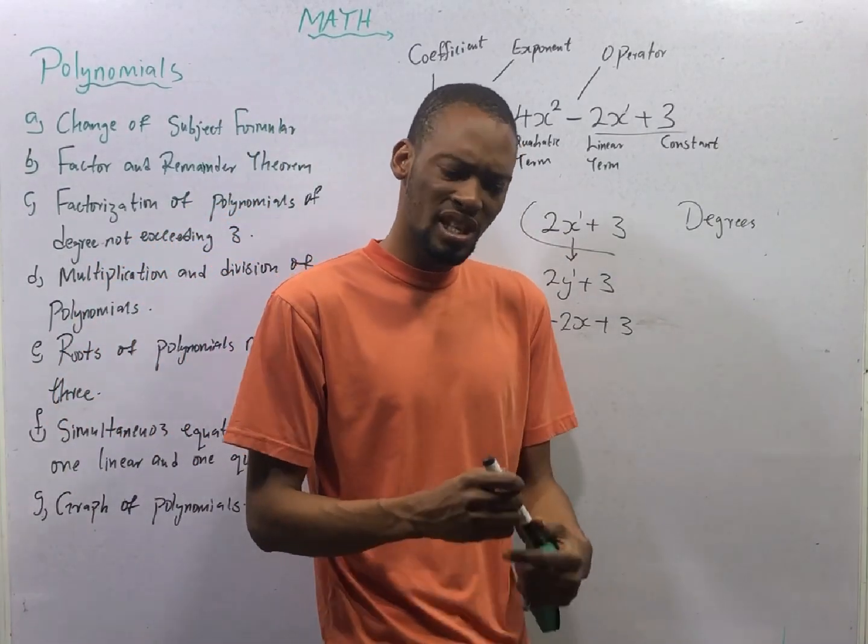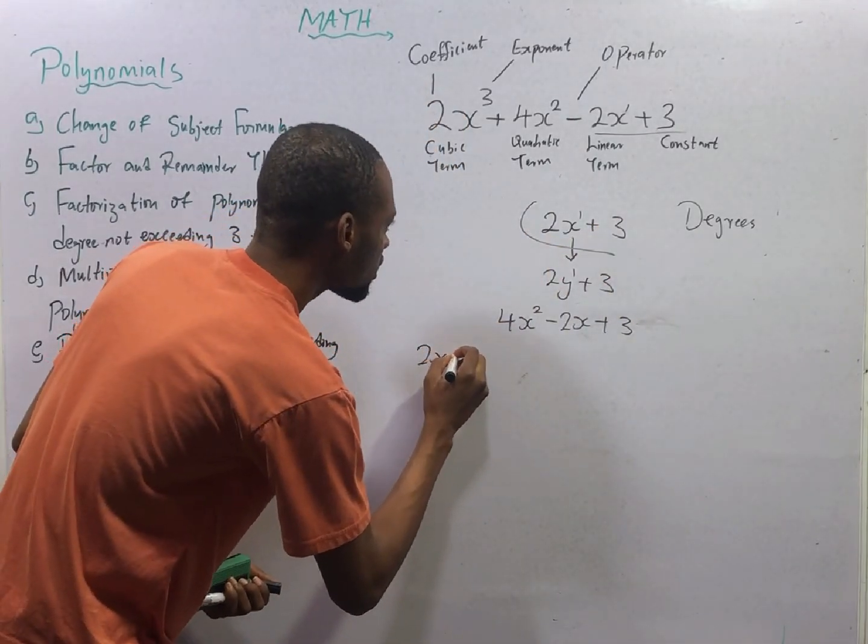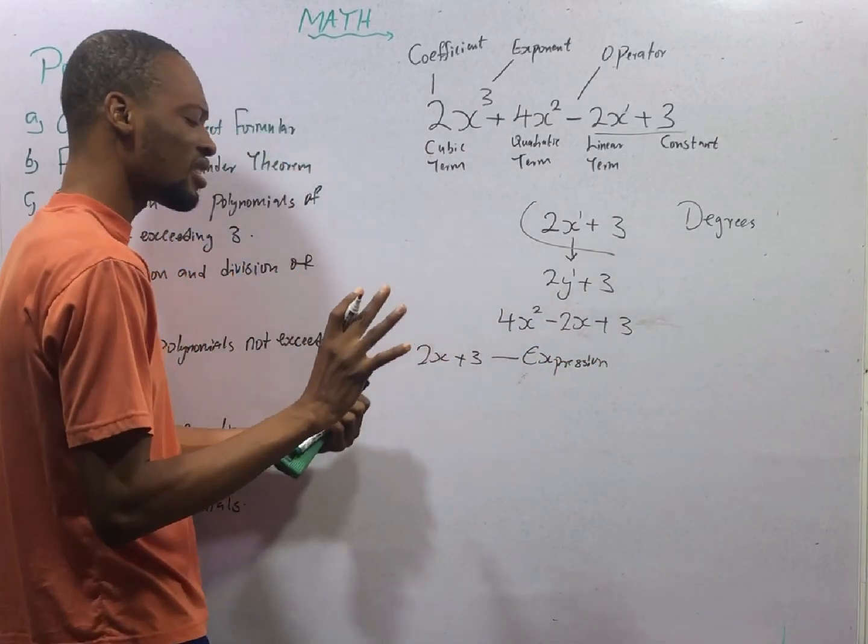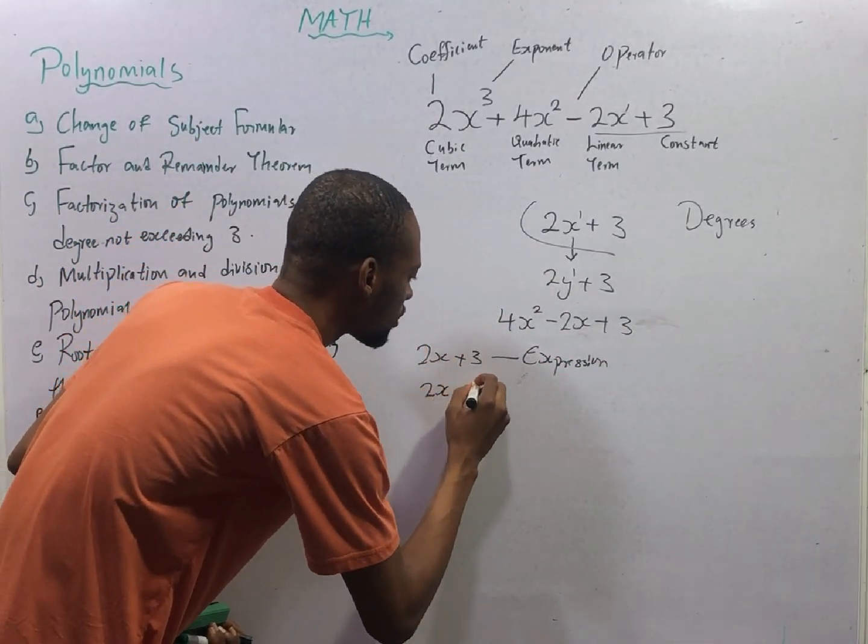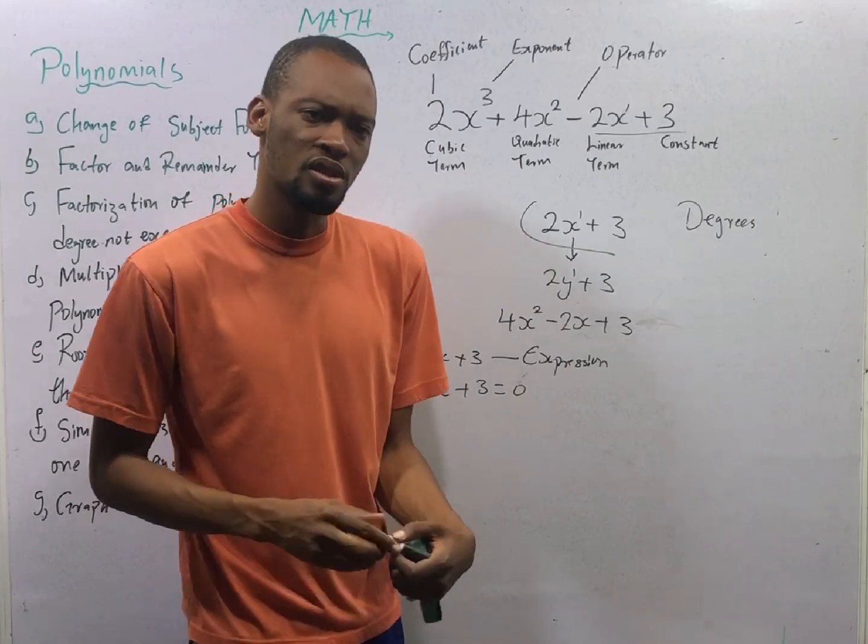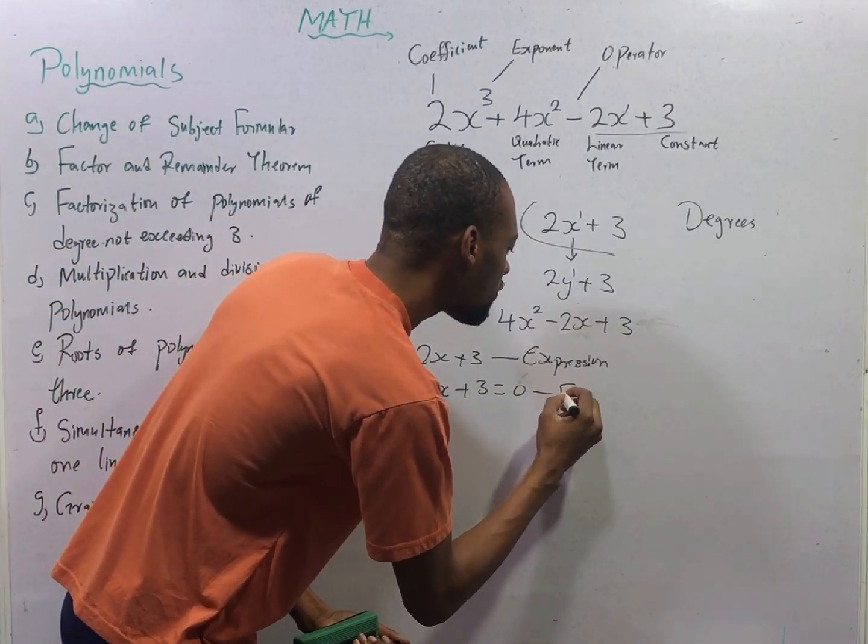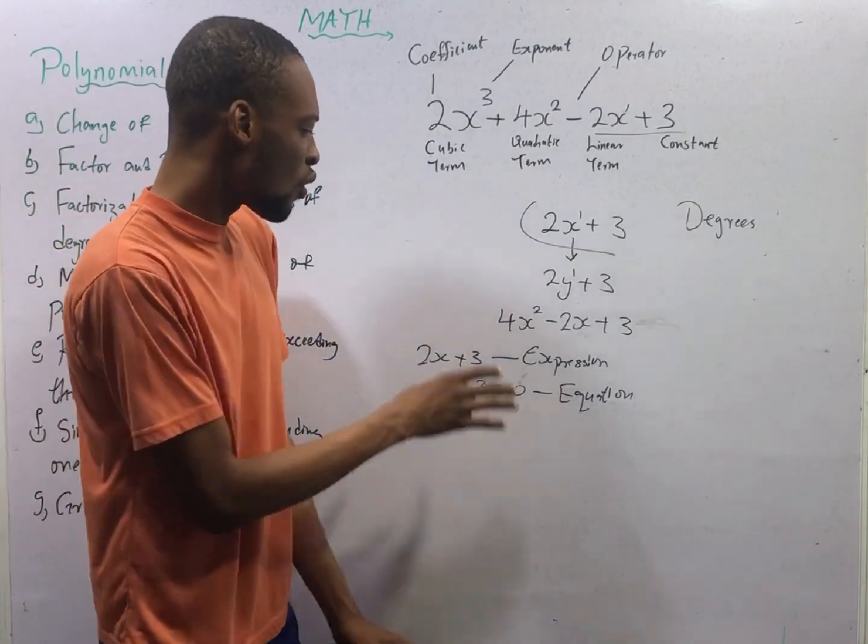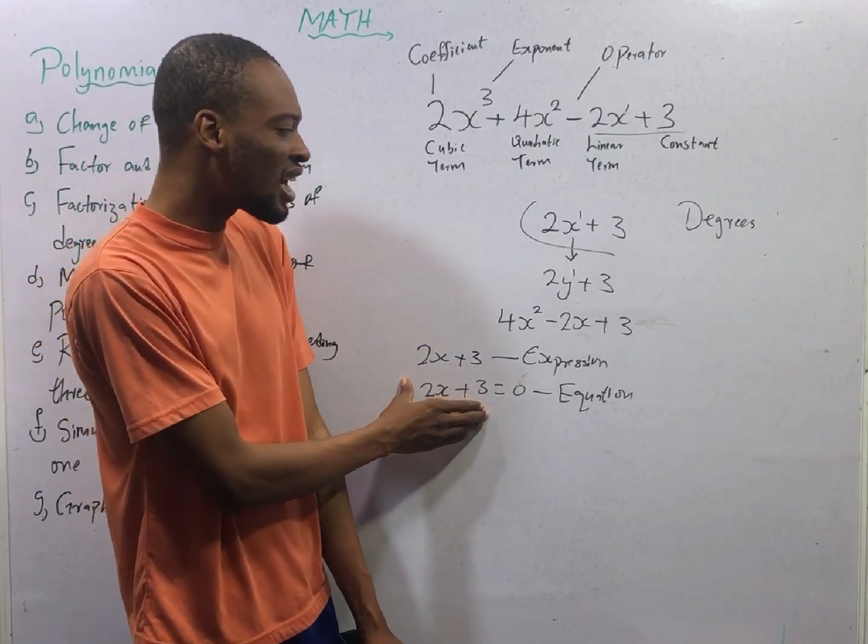There is a difference between expression and equation. 2s plus 3 is an expression, a linear expression. But 2s plus 3 equals 0 is an equation. It is an equation not because there is 0 here, but simply because there is an equal sign. When you have values separated with equality sign, it is referred to as equation. This is a linear expression, this is a linear equation.